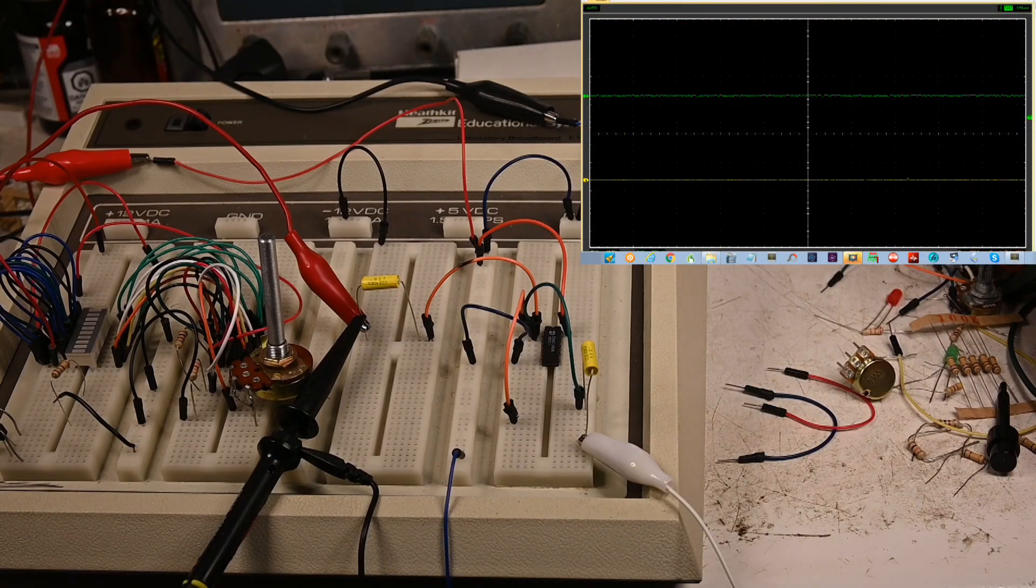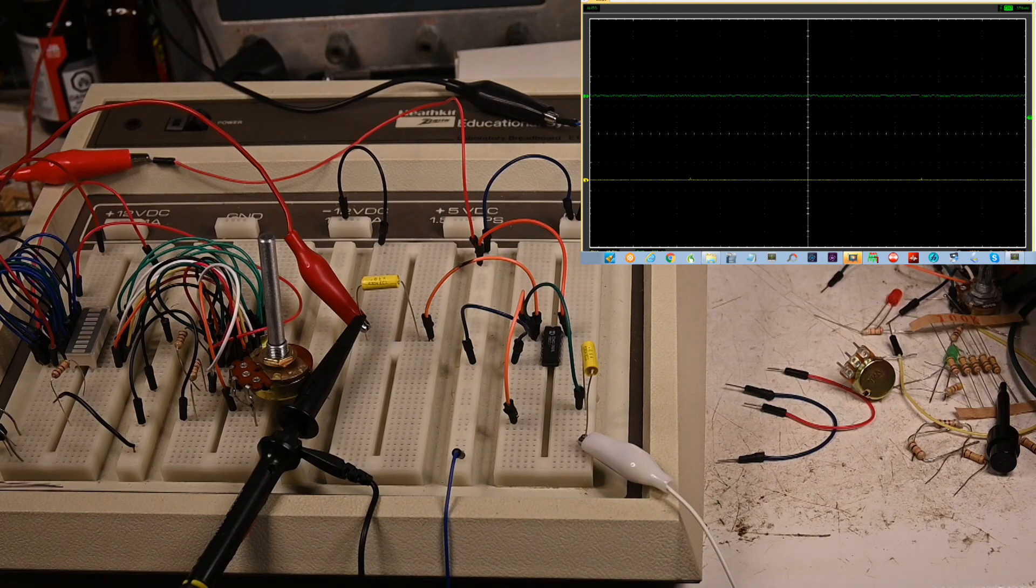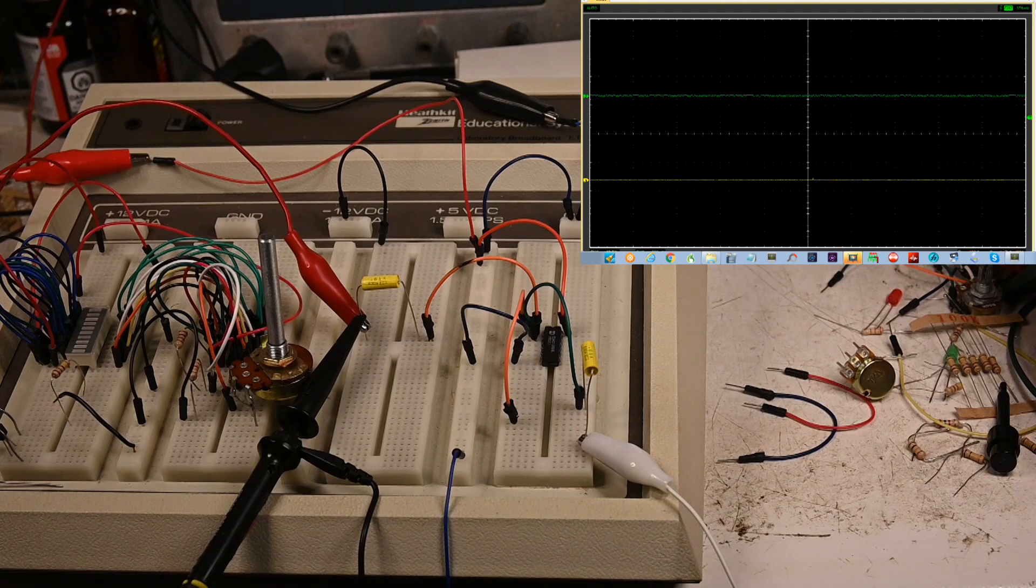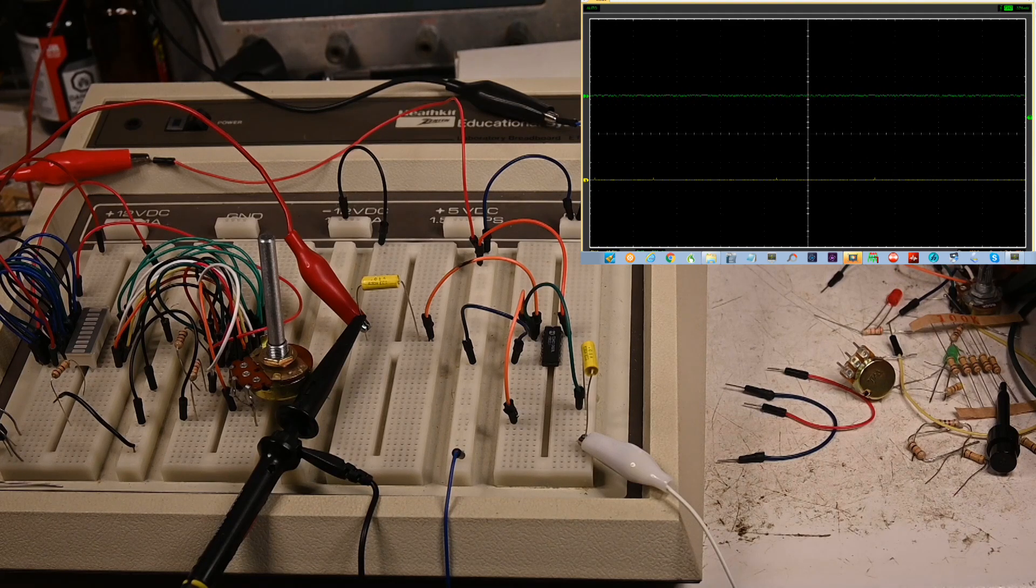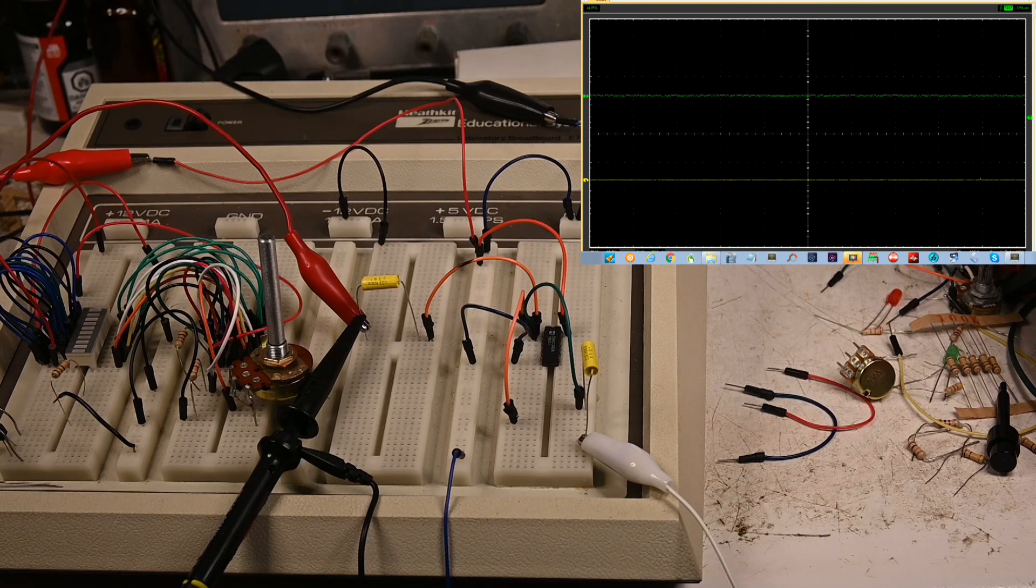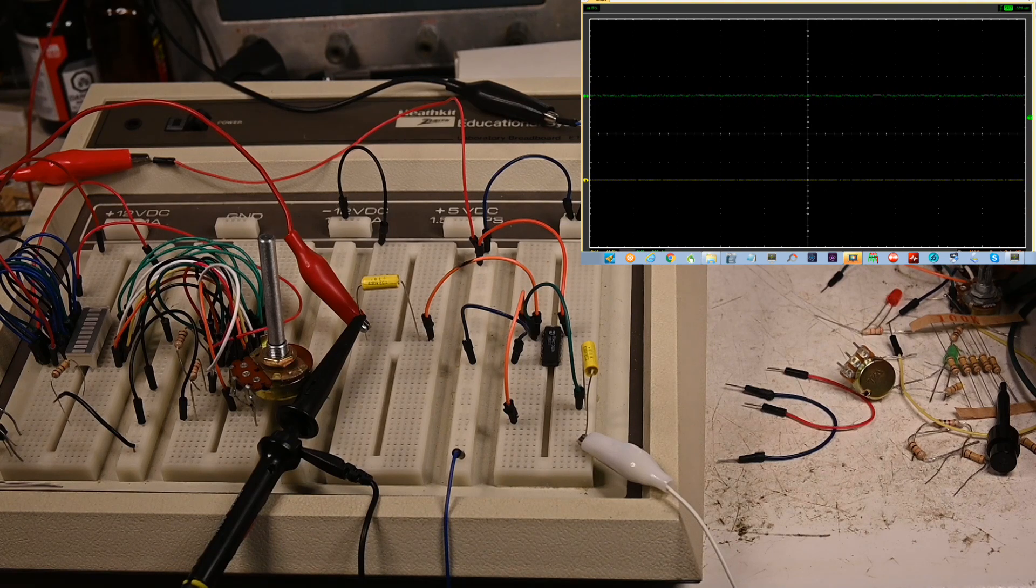Now I've got the Schmidt trigger inverter hooked up. And what I'm going to do is on the yellow trace that's on pin 1. That is going to increase in not frequency but amplitude. And we'll see what happens to the output at pin 2.